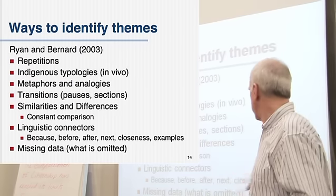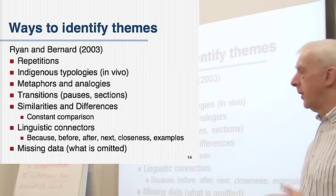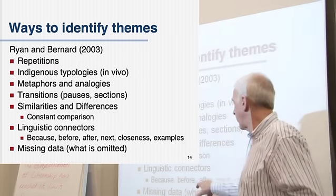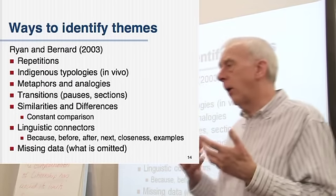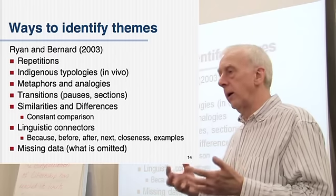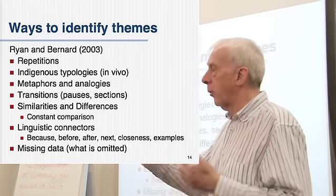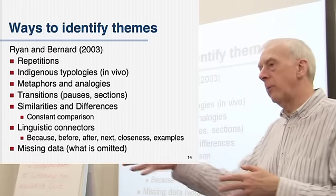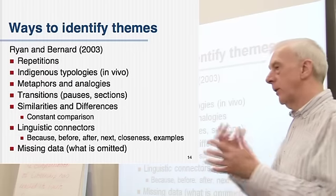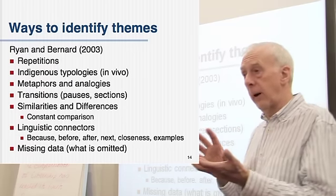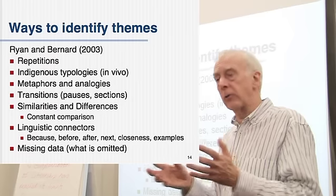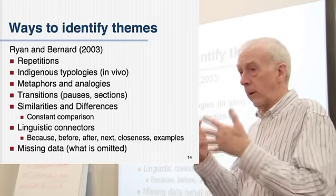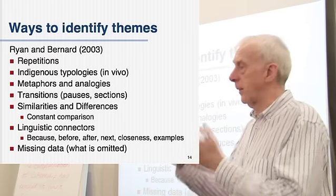They even suggest looking for linguistic connectors that indicate something else going on. The use of terms like 'because,' 'before,' and 'after' begins to suggest some kind of connections in a causal story — that happened and then that happened, that caused that, that happened because of that, or that led to that. You can see that people are beginning to tell a kind of story about the way actions and acts — or even actors — relate to each other. Looking for those kinds of terms gets you into a way of thinking about the work, and that could be a theme: the theme of explaining things in this kind of way.